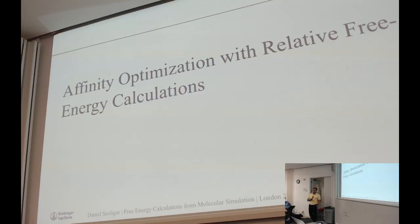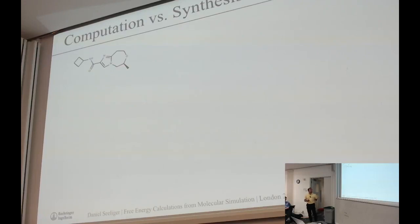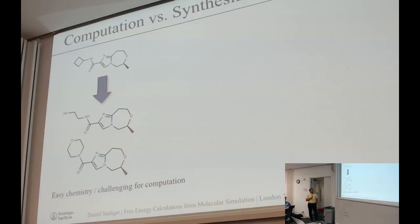There is one aspect regarding relative free energy calculations which has been a little bit underappreciated so far, and that's the complementarity with organic synthesis in terms of complexity. When we compute certain numbers, it always triggers a decision: should we design or synthesize a molecule? For instance, if you take this kind of molecule and want to optimize it via modifications on the amide side, chemists will immediately recognize that this is very straightforward chemistry. If you have the carboxylic acid, you can do parallel synthesis and generate 100 compounds in a day, so it's not really worth computing these.